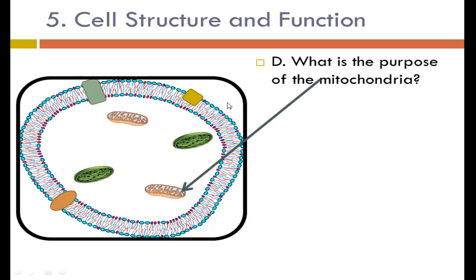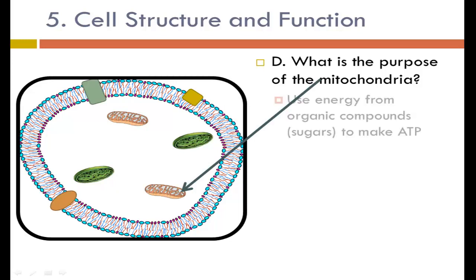The purpose of the mitochondria is to use energy from organic compounds — sugars — to make ATP. When plants first make sugars, they use sunlight to generate ATP, store that energy in sugars, and then later break down those sugars to regenerate ATP. ATP is like a rechargeable battery that the cell uses for energy; it can be recharged by breaking down sugars or, in plants, from energy from the sun.